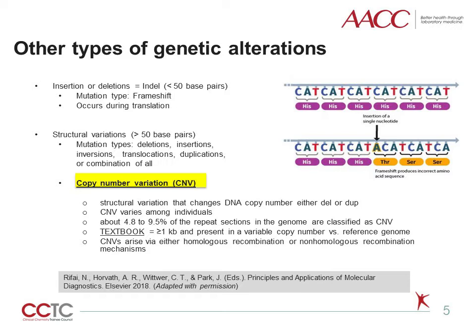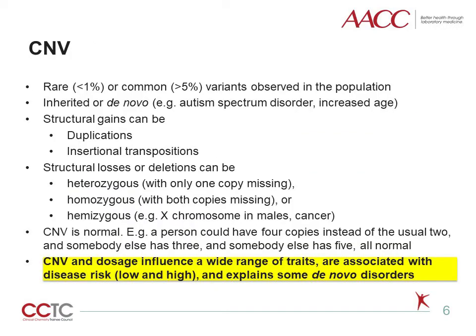CNVs are defined as segments of DNA one kilobase or greater and are present in variable copy number compared to a reference genome. CNVs can arise due to homologous recombination between repeated sequences or non-homologous recombination mechanisms throughout the genome. CNVs can be rare — occurring in less than 1% of the population — or common, where variants are preserved in greater than 5% of the population. When CNVs aren't inherited, they are de novo, meaning they spontaneously arise and may or may not contribute to familial transmission. For example, autism spectrum disorder is associated with high risk of CNV mutations that arise de novo.